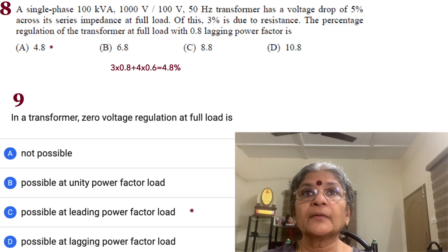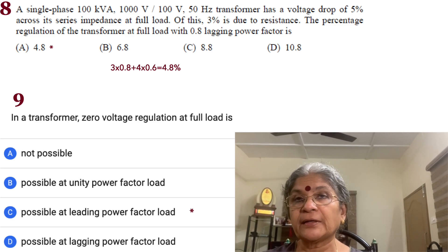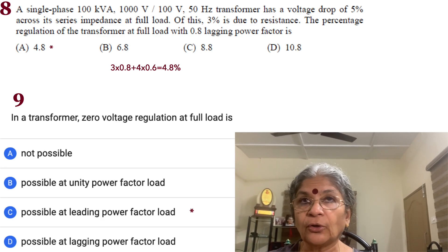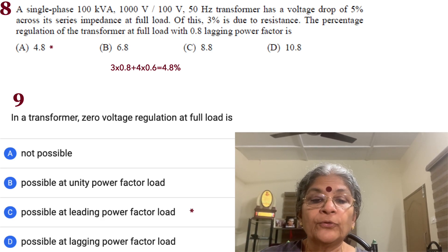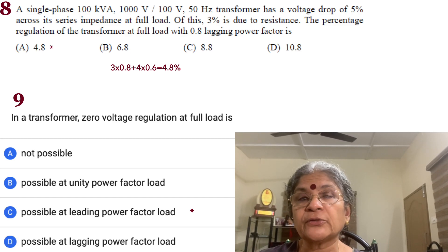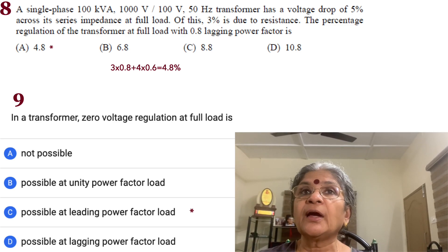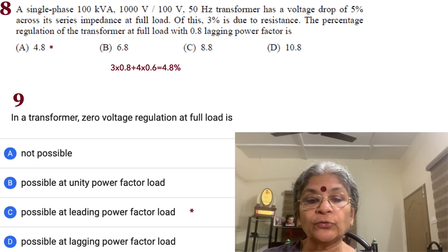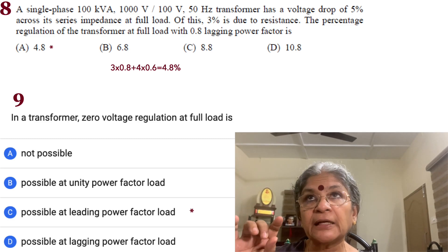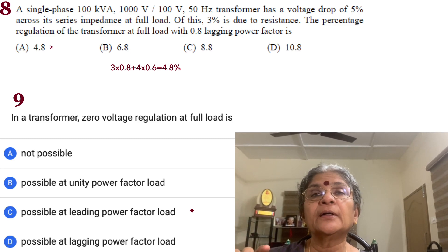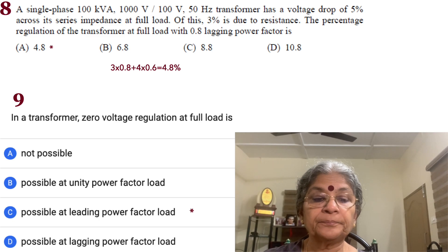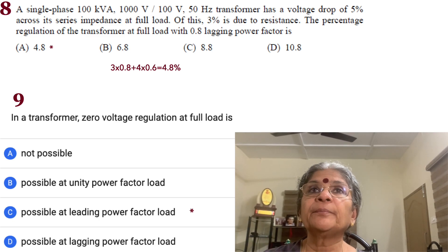Problem 9: a zero voltage regulation condition is possible only with a leading power factor load. At a particular leading power factor, the voltage regulation becomes zero. This specific power factor value should be known.